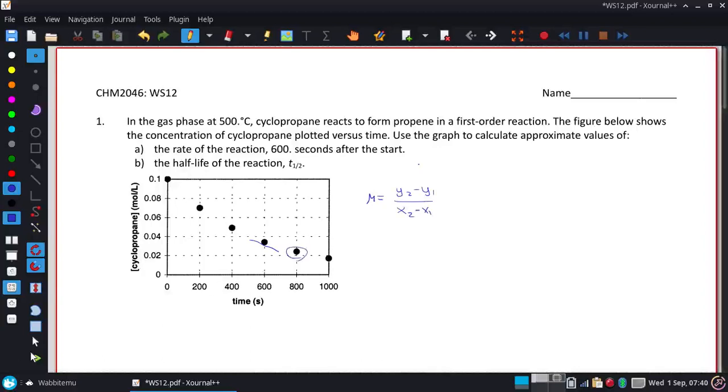I'm going to use these two points to estimate it, mainly because that makes the time really easy. So the time difference, the bottom of that, is just going to be 800 minus 400.